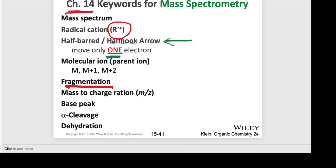Often the bond can break either way, so that each component can have either a radical character or a cation character. The unit we're using is mass — simple numbers: one for hydrogen, 12 for carbon, and so on. Another important component in your mass spectrum is known as the base peak, which is usually the peak set at 100%.